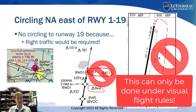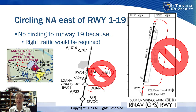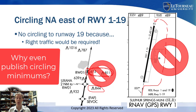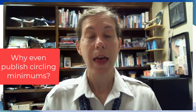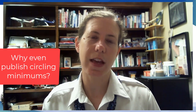At Sulphur Springs, those obstacles are right there. Provided I know they exist, I can see and avoid them — but I really cannot do a circle to land to runway 19. I did try reaching out to the FAA Aeronautical Charting Office about why the circling minimums are even published on the RNAV approach to runway 1 at Sulphur Springs, and I did not get any satisfactory answers.